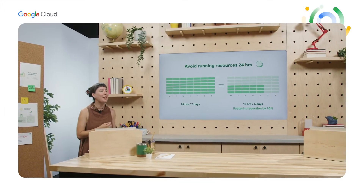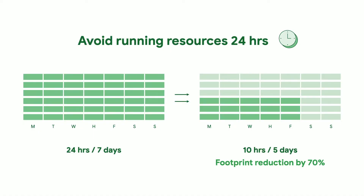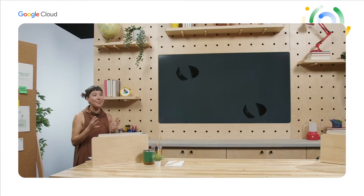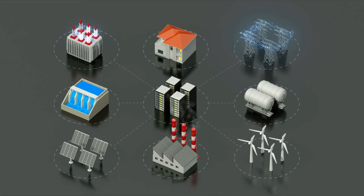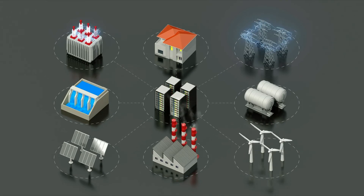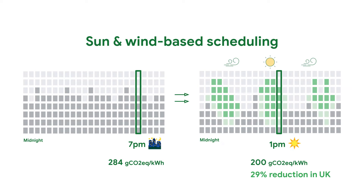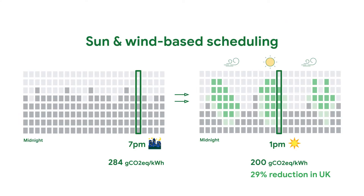The next recommendation is to avoid resources from running 24 hours a day, especially for development and testing. By shifting resources to operate 10 hours a day during five workdays a week instead, you can reduce your footprint by 70%, which is an impactful and cost-saving move. Programming workloads to run during the day when there's clean energy available like solar or wind is also very powerful. For example, checking the energy mix in the UK on Electricity Map at 7pm shows 284 grams of CO2 equivalent per kilowatt hour, whereas executing that same workload at 1pm can be 200 — reducing carbon emissions by up to 29%.